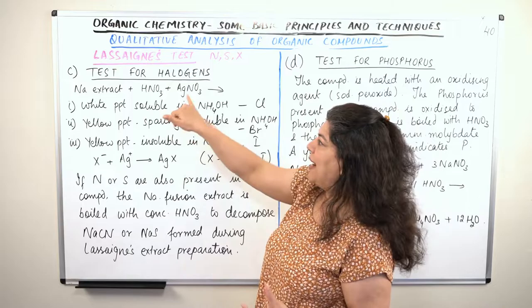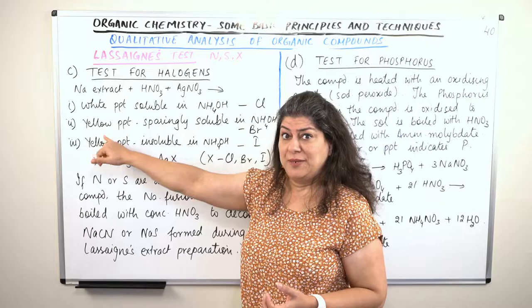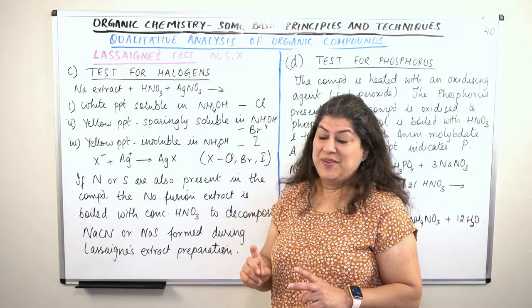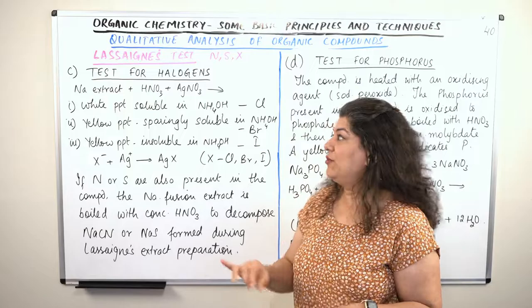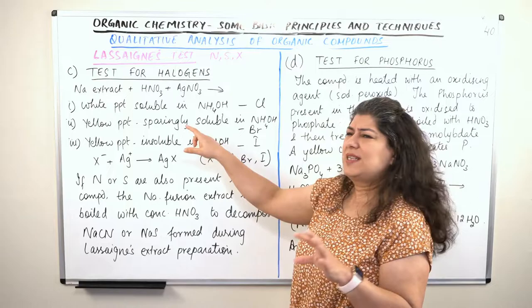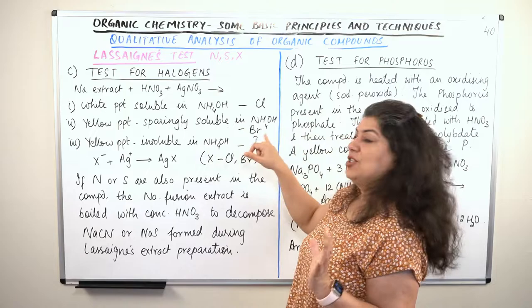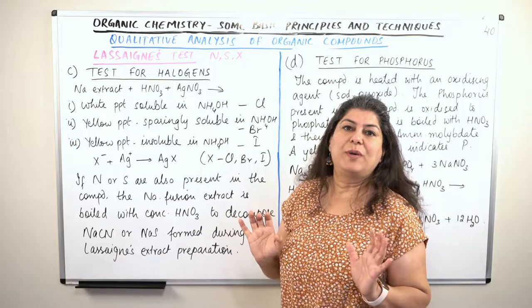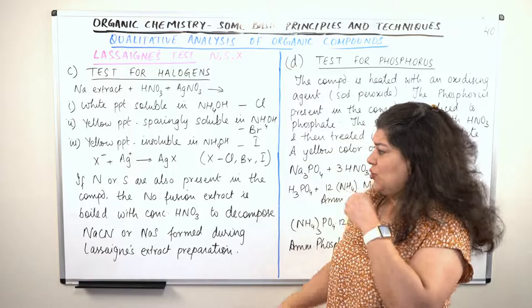If instead of a white precipitate you get a yellow precipitate when you add silver nitrate and nitric acid to the sodium extract, the yellow precipitate could be either bromine or iodine. To distinguish between them, you again add ammonium hydroxide. If some of it dissolves and some of the turbidity decreases, then it is bromine. But if it is absolutely insoluble and nothing happens when you add ammonium hydroxide, it means it is iodine.